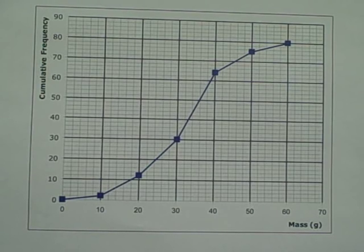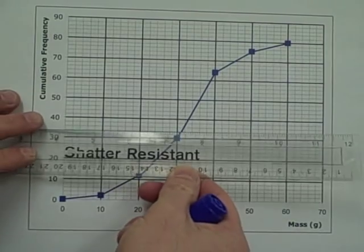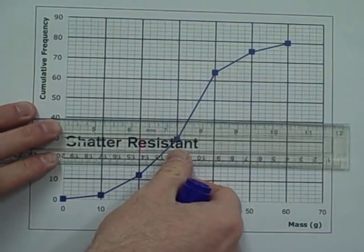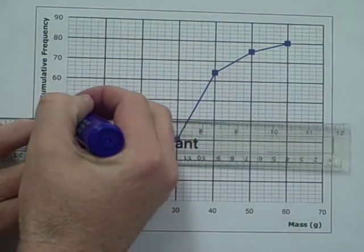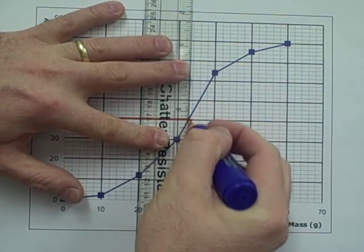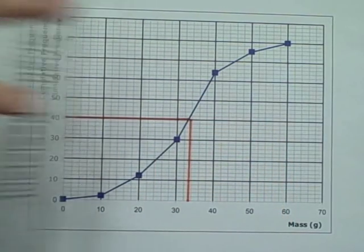Now we are going to find the median. The median lies halfway up the graph, so out of 80 insects it is the 40th. We draw a line along from 40 to the graph, and then drop it down to the x-axis. We shall read the value off at the end.